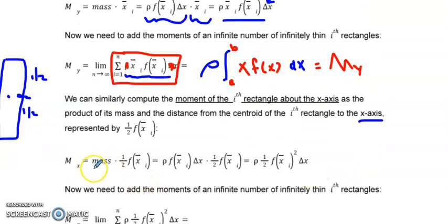So then m sub x is the mass times the centroid, basically. So then the centroid is going to be, or the mass, excuse me, is going to be the rho value. And then this is the area of the ith rectangle. And then this is the centroid with respect to x of the ith rectangle.